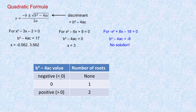Here's a summary table: if the discriminant b squared minus 4ac is negative (less than 0), there are no roots. If it's equal to 0, there's exactly one root. And if it's any positive value, you always get two roots. So: two roots, one root, no roots.